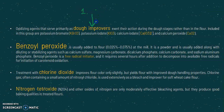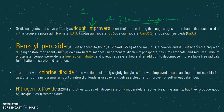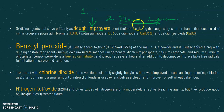We have two categories of dough improvers: number one is the dough improvers, and the second is the flour improvers. As the name suggests, dough improvers act when we add water to the flour and knead it — they act at that time. But in the case of flour improvers, they act when they are mixed into the flour.